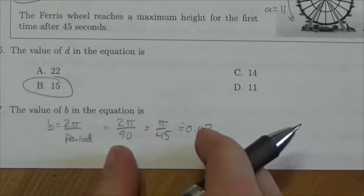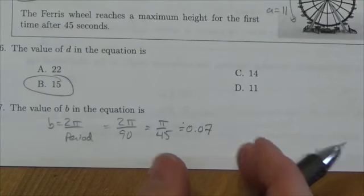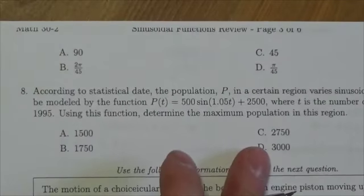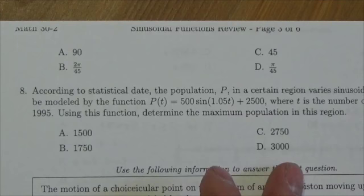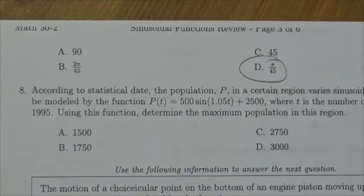So I haven't flipped over the page yet to look at my options. This might not be multiple choice, might even just be fill in the blank. Oh, but it is multiple choice. Here's my options. And notice that they really haven't simplified. The value of b in this case we had determined was π over 45, and that's the d option.